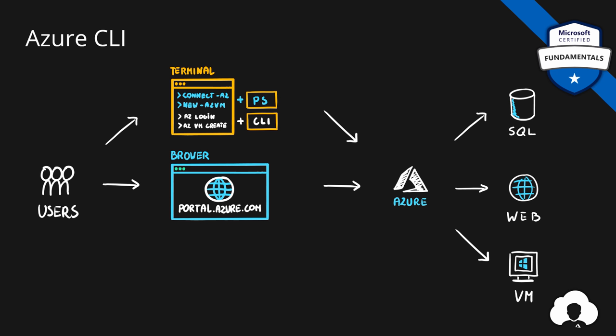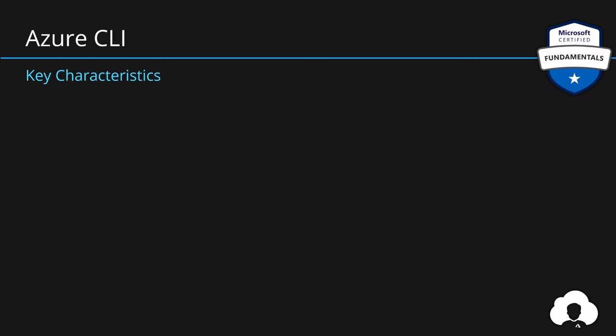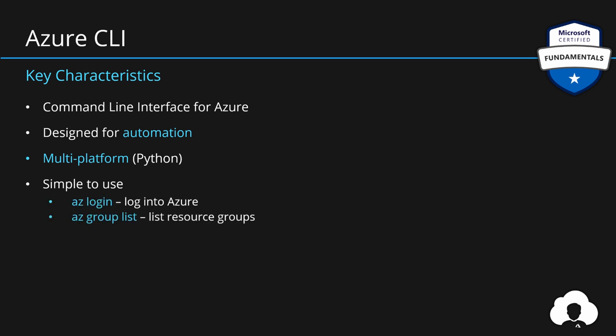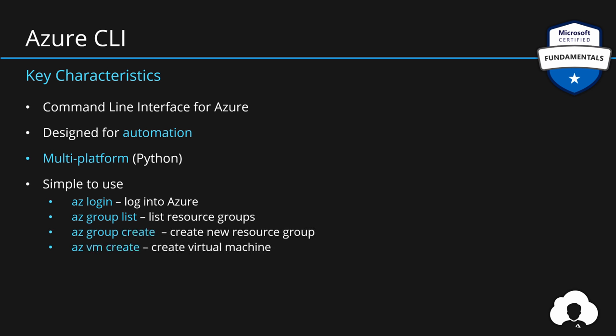Instead of installing modules for PowerShell, you will install CLI — just another way of managing Azure resources through a terminal. Azure CLI is our command line interface for Azure, also designed for automation just like PowerShell, and it is also multi-platform. It's based on Python, so you can use it on any operating system. It is fairly simple to use: you just type az login to login to Azure, az group list to list resource groups, az group create to create new ones, or az vm create to create a virtual machine.